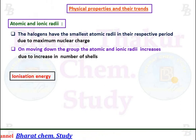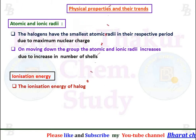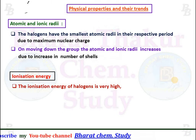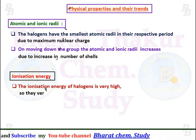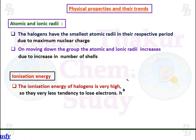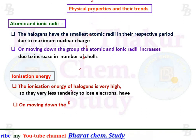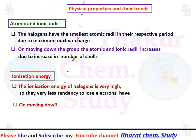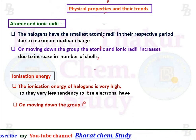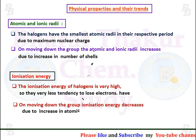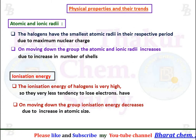Ionization energy: the ionization energy of halogens is very high, so they have very less tendency to lose electrons. On moving down the group, the ionization energy decreases because of an increase in atomic size.